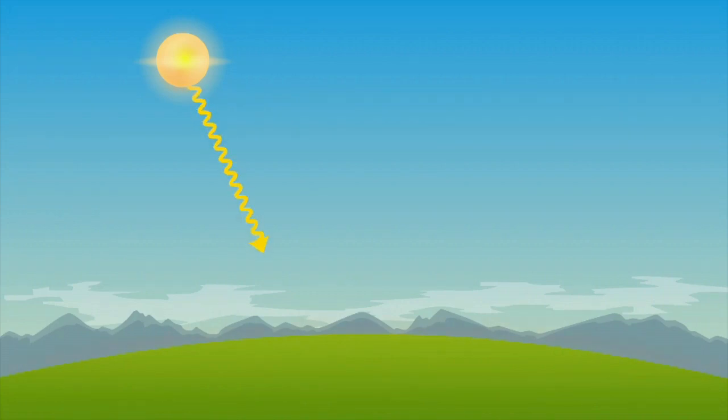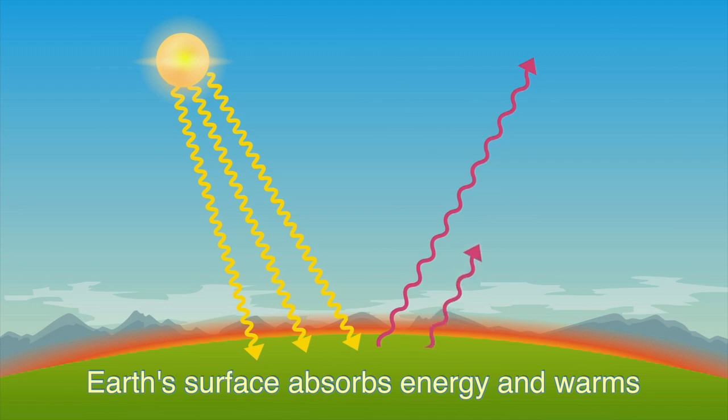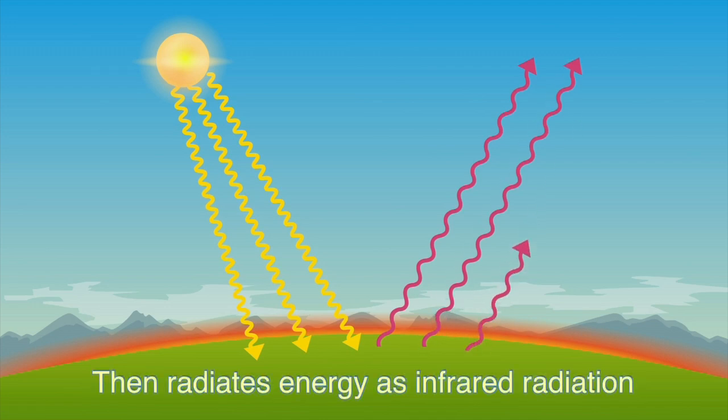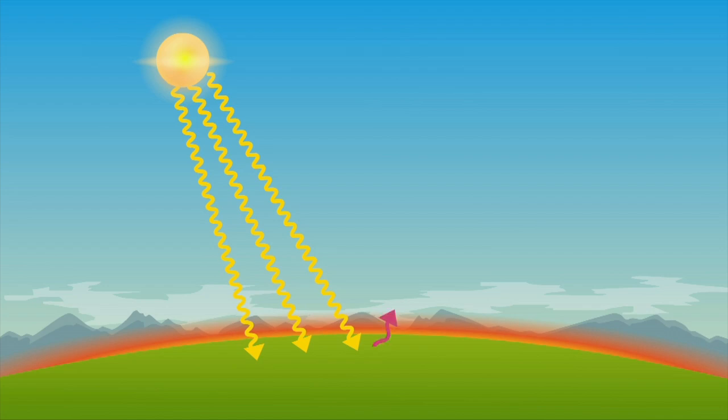The Sun's higher frequency radiation, mainly visible light and UV, reaches the Earth's surface. The surface absorbs the energy and warms up. It radiates some of this energy back as lower frequency infrared radiation. Some of this radiation is lost to space. Some is absorbed by certain gas molecules.